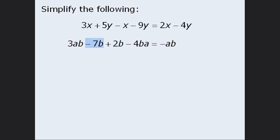Next we have negative 7b plus 2b, which simplifies to be negative 5b. So the expression here simplifies to be negative ab minus 5b.